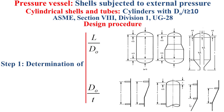As depicted by the figure in the slide, L represents the design length of the vessel section between support lines in the case of a pressure vessel, or the total length of the tube between tube sheets in the case of a heat exchanger, for example.